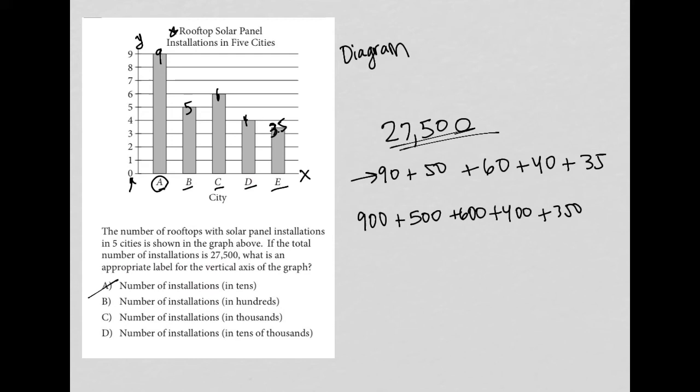Again, you can go to your calculator and figure out if that works out. I'll just do it so we can see. So 900 plus 500 plus 600 plus 400 plus 350, we get 2,750. So not exactly, in fact, very far off from the number that we're looking for. So B is gone.